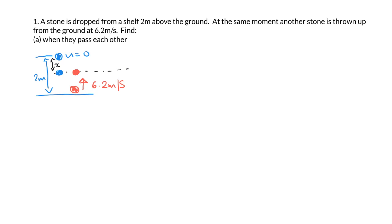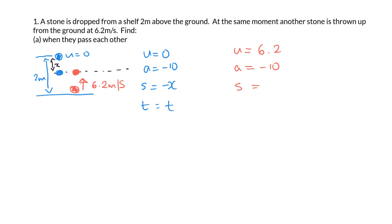Taking the blue stone first: its initial velocity is 0, acceleration is minus 10, its displacement will be minus x in a time t. For the red one, thrown up from the ground, u is 6.2, acceleration is minus 10. The whole distance is 2 meters; if the blue one drops x meters, the red one's displacement is 2 minus x. They must pass at the same time.